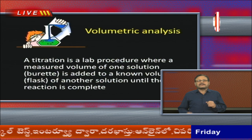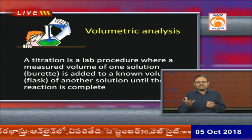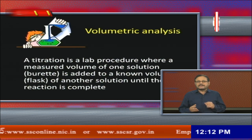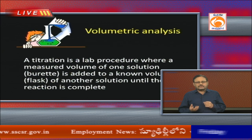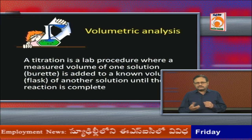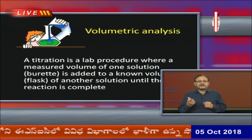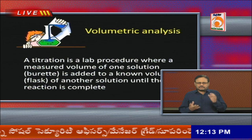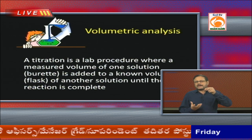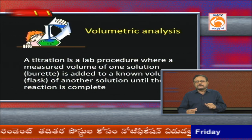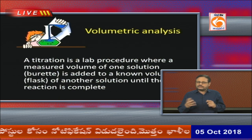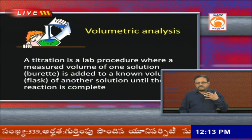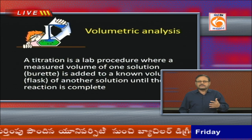A titration is a lab procedure where a measured volume of one solution — which we generally take in a burette — is added to a known volume in a conical flask until the reaction is complete. We use a burette with one solution and a conical flask with an exact volume of another substance and perform the chemical reaction by adding one to the other.